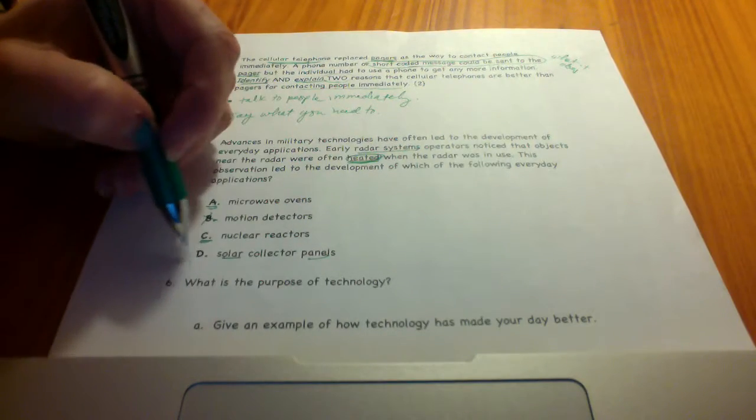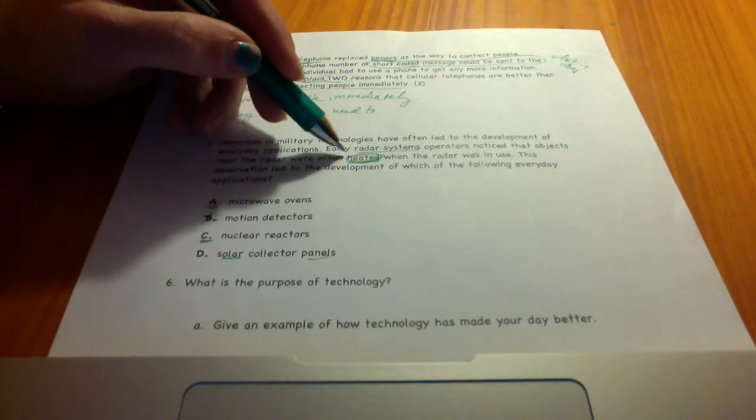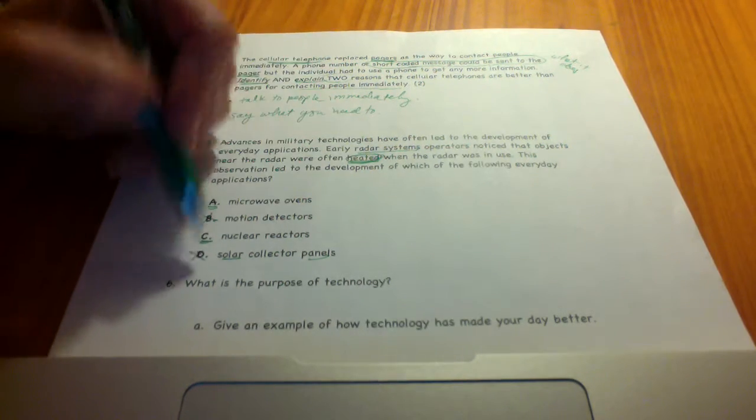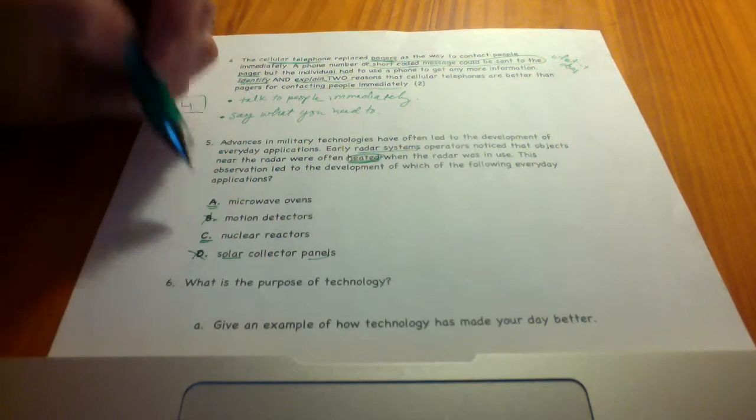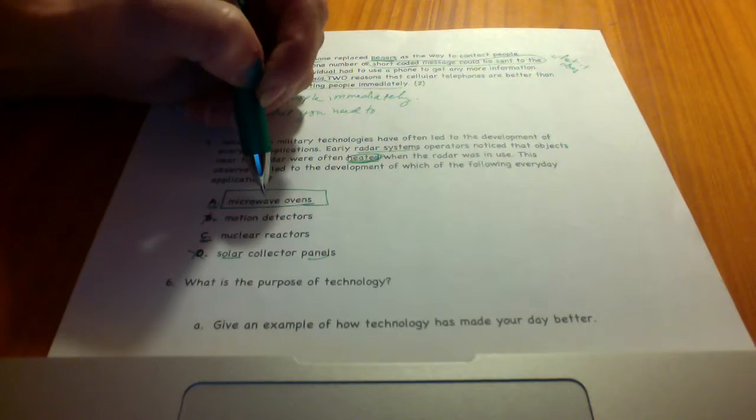So solar panels, they do collect heat, but this is the radar was heating things. All right, what types of stuff will actually heat it? Nuclear reactors do, but the one that we are most familiar with is a microwave oven.